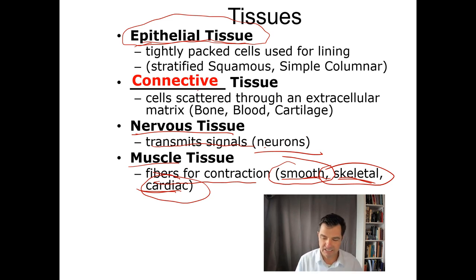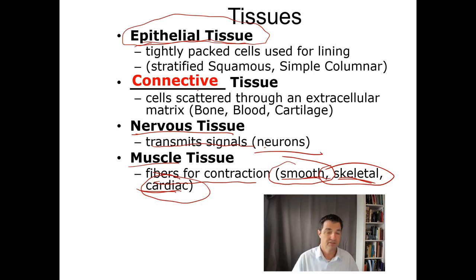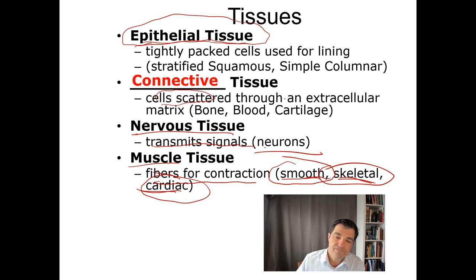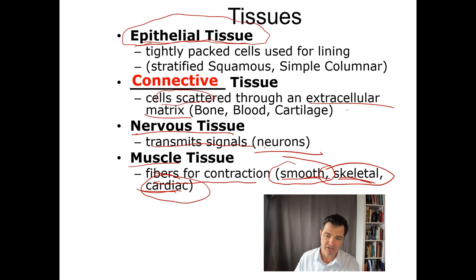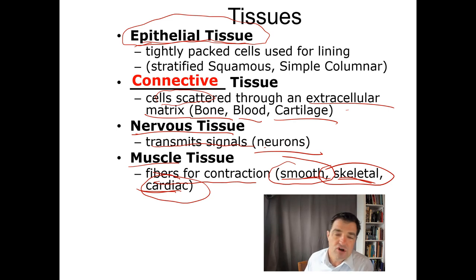Connective tissue is a very broad group, often simply defined as tissue that connects the other tissues together. It usually consists of cells scattered through some form of extracellular matrix — there are other things surrounding the cells beyond just the cells themselves. Blood, cartilage, bone, and fat are all forms of connective tissue.